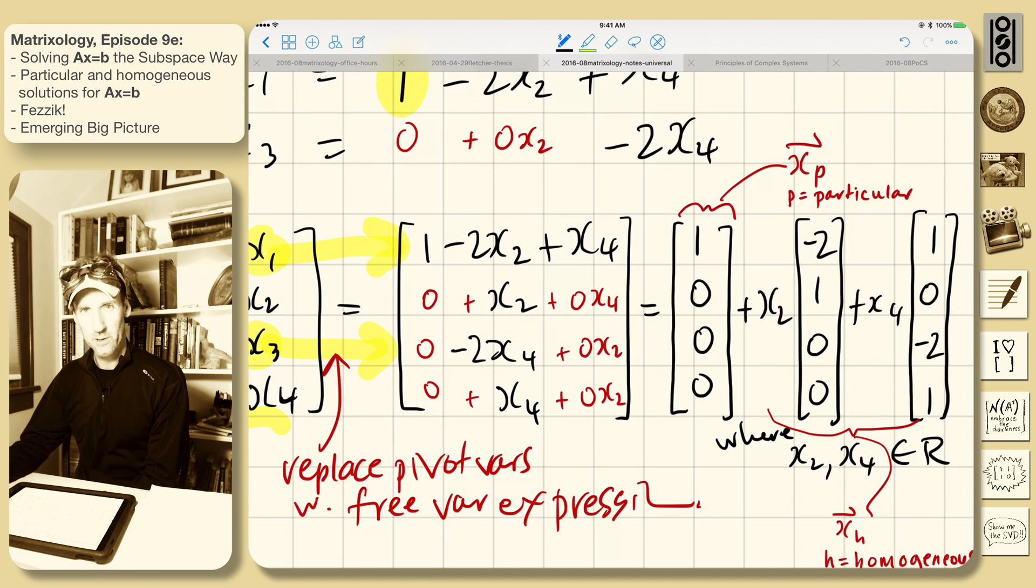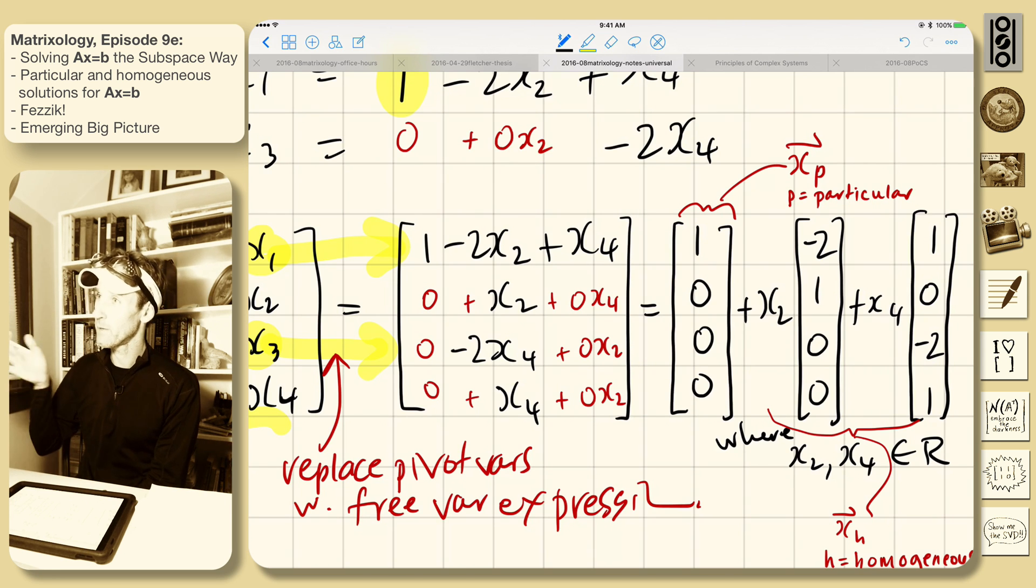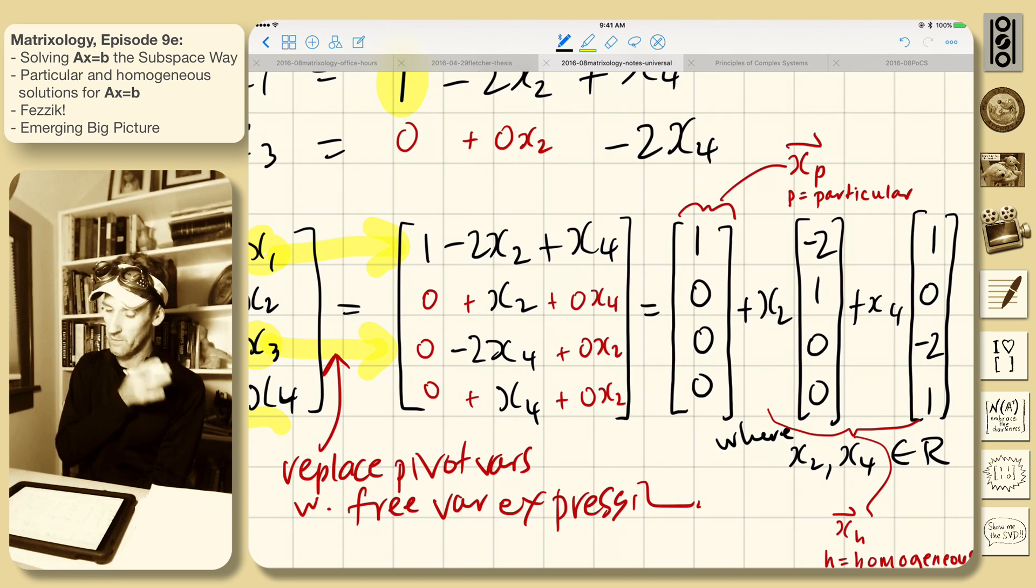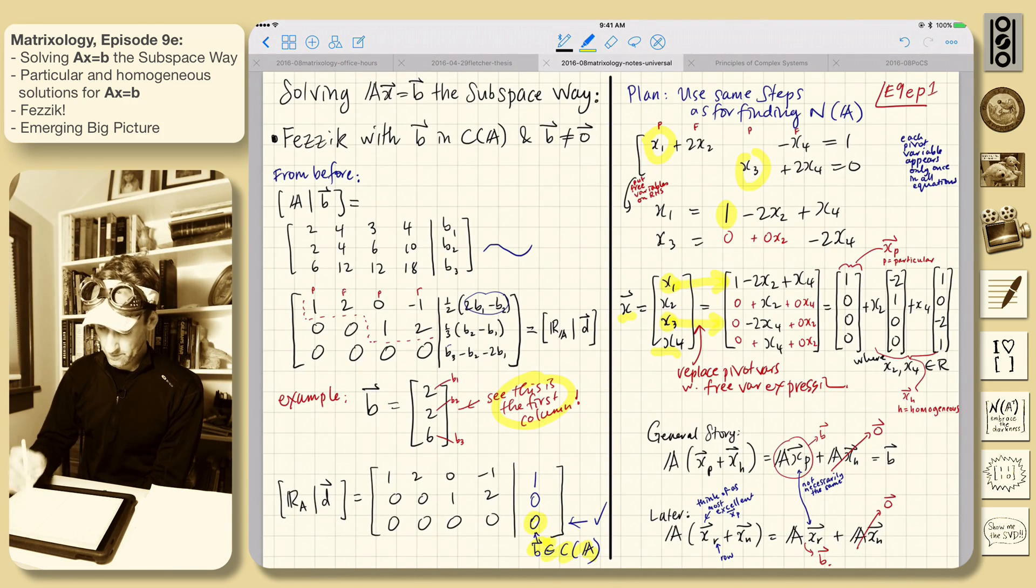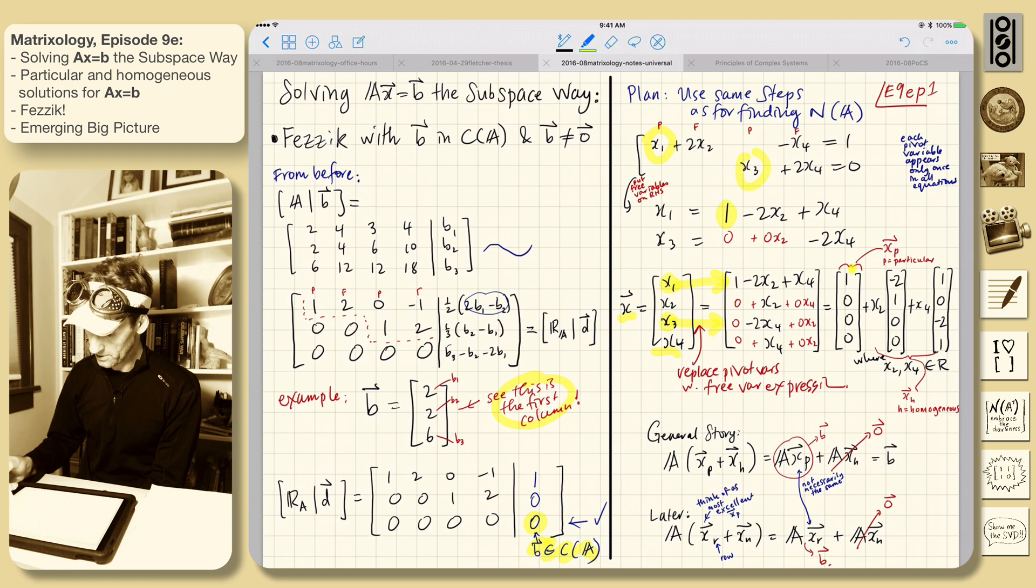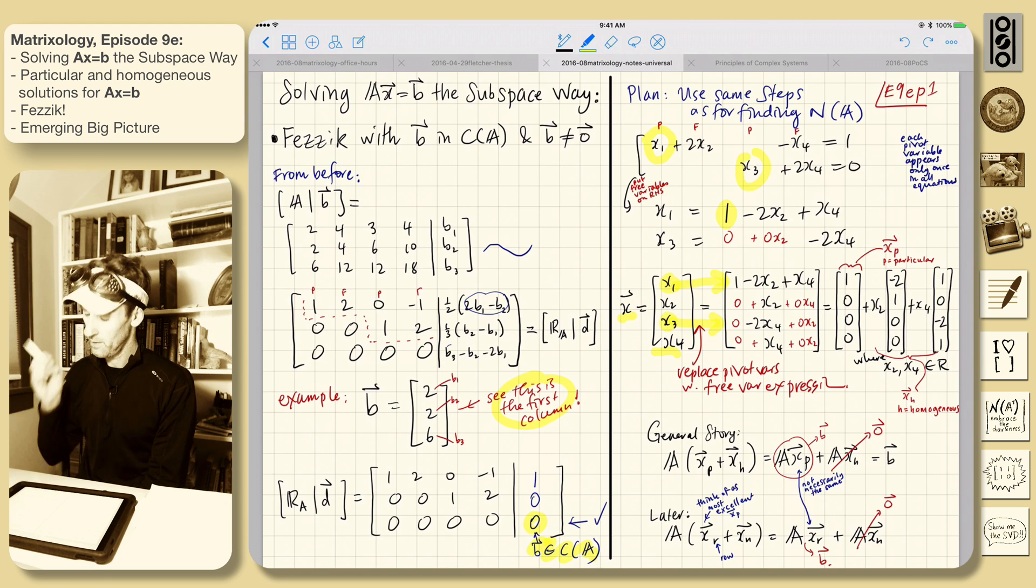As we noticed at the start, this works. So one of the first column, zero of the other columns works. It does give us A times this vector equals the B in question, (2, 2, 6). A times this vector here equals (2, 2, 6). That's what we want. So we call that the particular solution - it does the job.